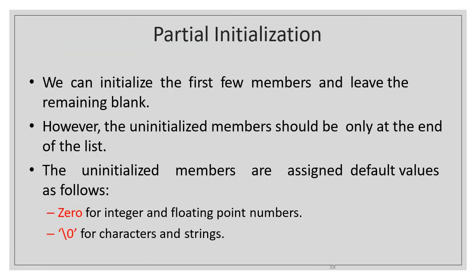We can also perform partial initialization — we can initialize the first few members and leave the remaining blank. However, the un-initialized members should be only at the end of the list. The remaining members will be assigned default values: integers or floating point will default to zero, and characters or strings will default to null (slash zero).